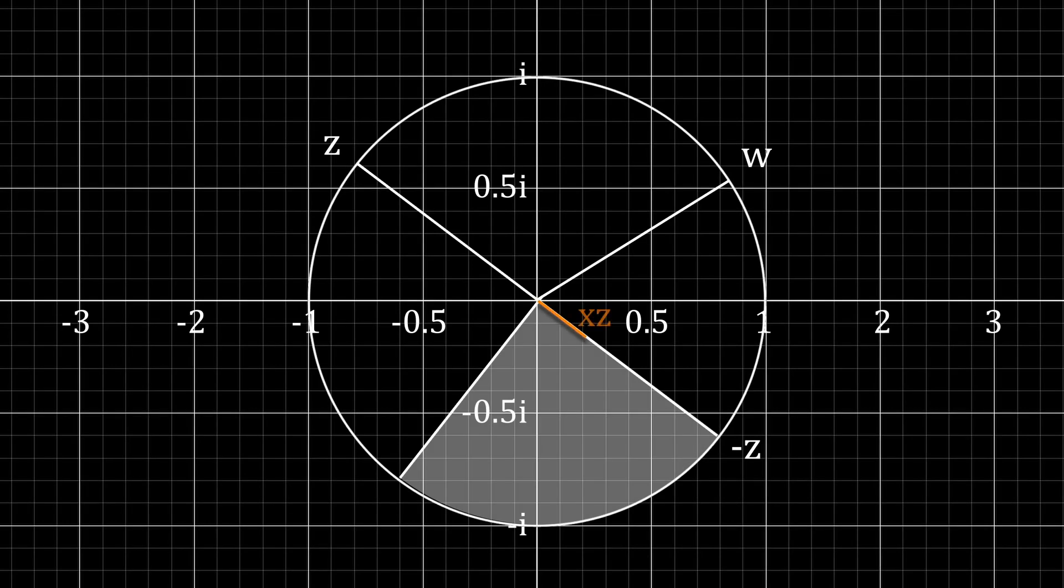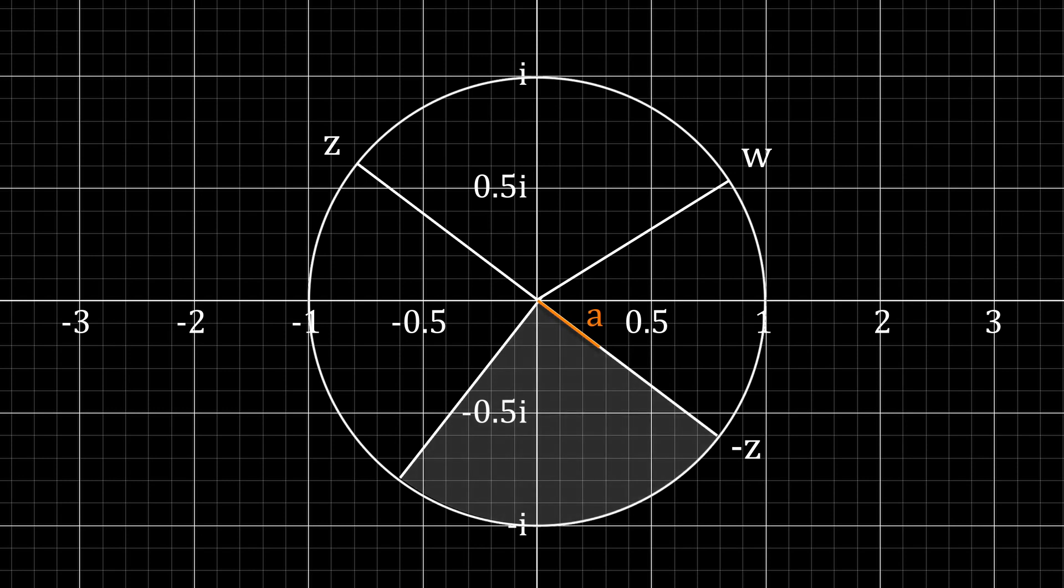Let's say we need to travel xz or a. We know it has to be in this direction as x has to be negative. Then we need to travel some amount b in this direction. Once again, we know it has to be in this direction as y is also negative.